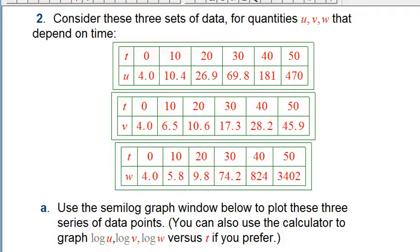Here's part two of solutions for exponential and log modeling. So we've got three sets of data for three different quantities, u, v, and w, that depend on time. The t's are all the same in all these cases, and they're all regularly spaced, which is nice. And then here's the values for u, for v, and for w.